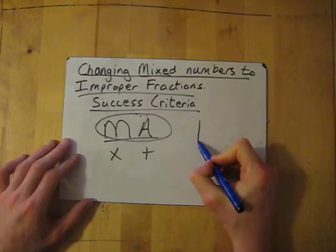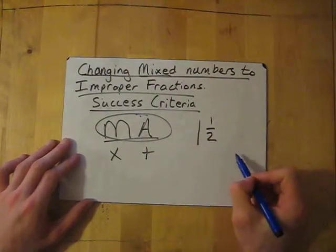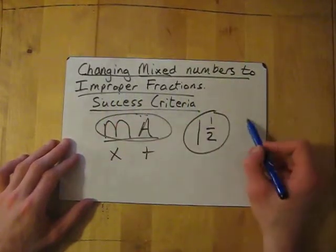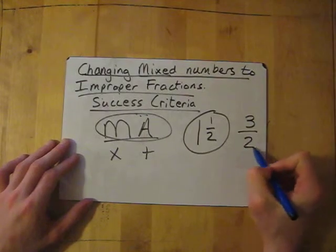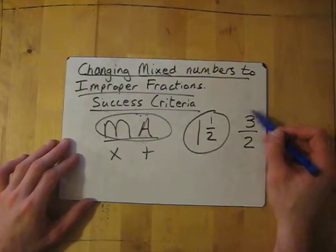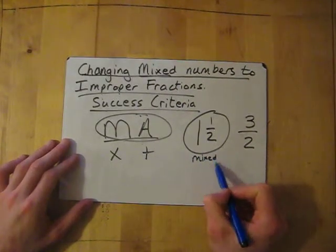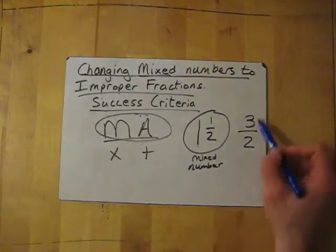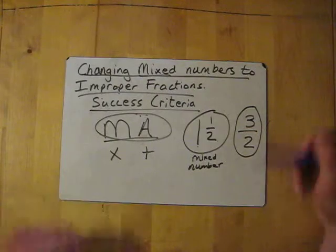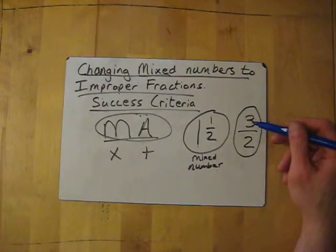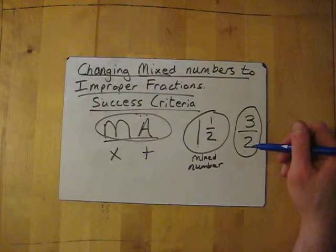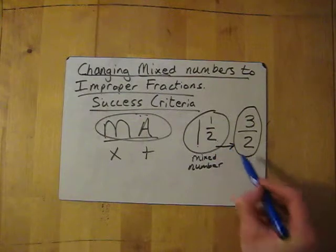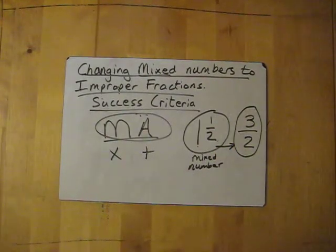Now a mixed number is when you've got a whole number alongside a fraction. So this here is a mixed number. And an improper fraction would be a fraction where the top is more than the bottom. This is your mixed number when you've got a mixture between a whole number and a fraction. And your improper fraction, or sometimes it's called a top-heavy fraction, because the top is heavier or worth more than the bottom. But we'll call them improper fractions in this. And to change from this to this, all you have to do is ask your MA for help.